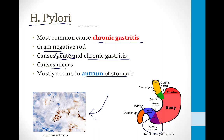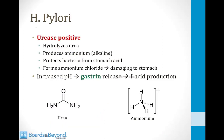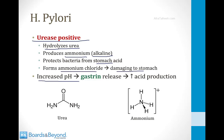H. pylori bacteria sit on top of epithelial cells without invading the mucosa, secreting a protective barrier to survive in the high-acid stomach environment. It has an enzyme called urease that hydrolyzes urea to produce ammonia, which then becomes ammonium, creating an alkaline environment that protects the bacteria from stomach acid. The ammonium also forms ammonium chloride, which is damaging to the stomach. Because H. pylori creates an alkaline environment, the stomach senses this rise in pH and releases gastrin, leading to more acid production.